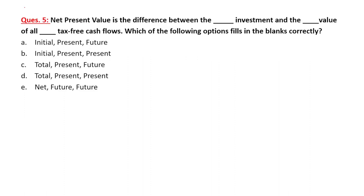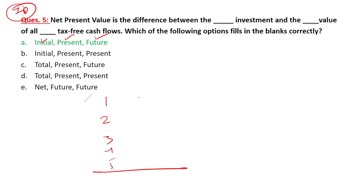This is a very important question asked in previous papers. NPV is the difference between the initial investment and the present value of future after-tax cash flows. So you take cash flows coming in year one, two, three, four, five — total present value of all those future cash flows. That is the concept of capital budgeting — you calculate the present value of future cash flows.